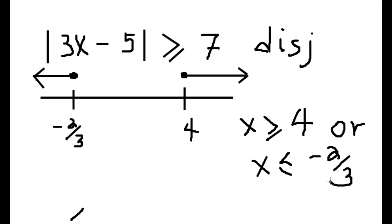The key takeaway is that when dealing with absolute value inequalities — whether they are less than, greater than, or with equal signs, whether they are conjunctions or disjunctions — we handle them the same way. We set up a three-sided inequality, solve for x by performing the same steps to all three sides, find the critical numbers, draw the number line, and plot the conjunction or disjunction. This is a fast, easy method — not always the way they teach in class — but it will speed up your process and make things far simpler.